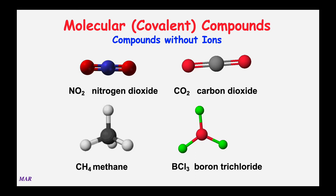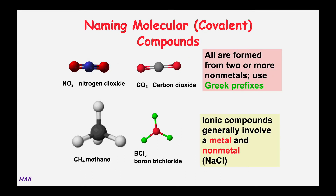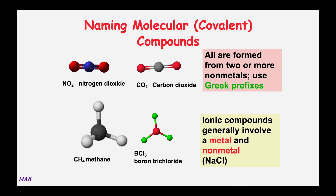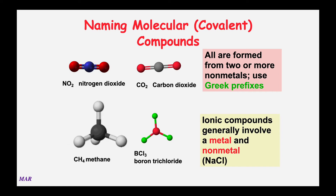Remember, hydrogen can kind of play the field—it can act both as a metal and a non-metal. Naming these is pretty easy. It's literally just the first name followed by the last name, and the formula is important. CO2 is always CO2, not O2C. The second atom listed gets an -ide ending, indicating it's the negative side. You use a Greek prefix to tell how many atoms there are.